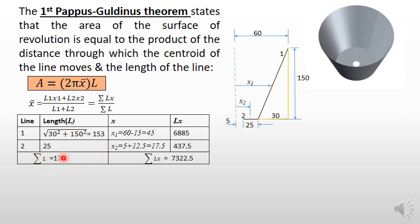Now apply this formula: x̄ will be somewhere here in this line. Let us calculate that distance. x̄ = 7322.5 ÷ 178 = 41.1. So the distance from this axis is 41.1.